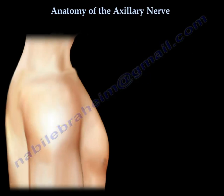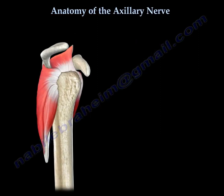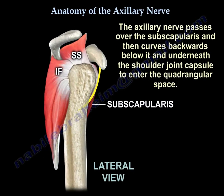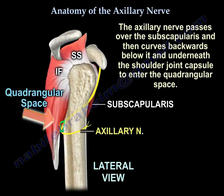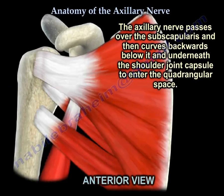The axillary nerve passes over the subscapularis, then curves backwards below it and underneath the shoulder joint cavity.